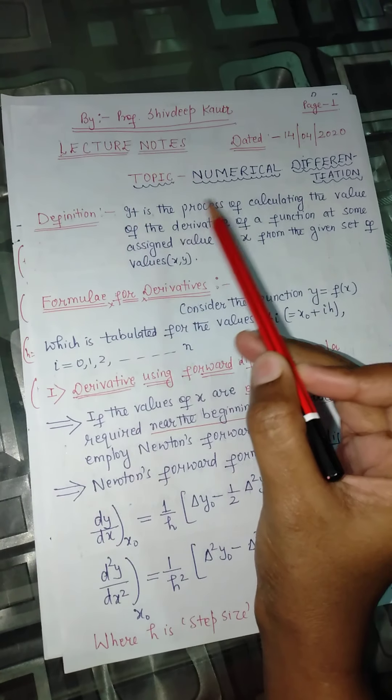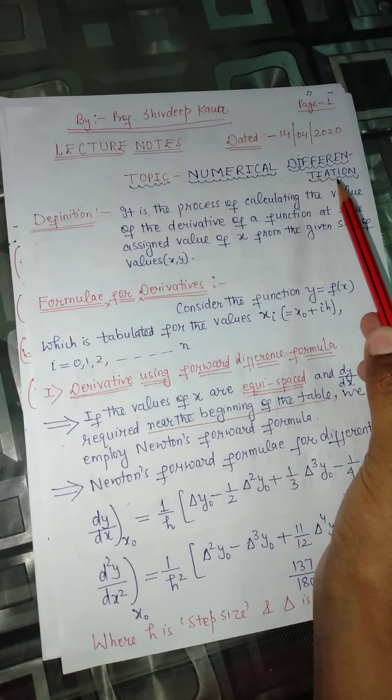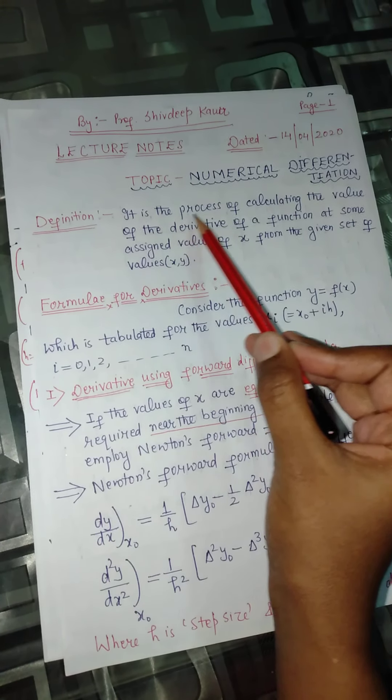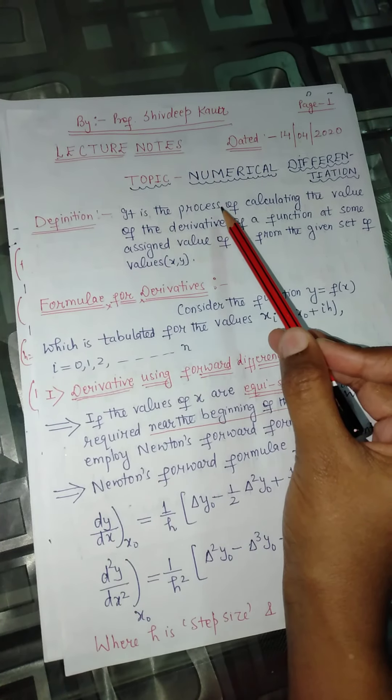Good morning students. Today we will discuss how to do numerical differentiation. Numerical differentiation is a technique, a process for calculating the value of a derivative — dy/dx, double derivative, or triple derivative — of some function f(x) or y at some assigned value of x, from a given set of tabulated values of x and y. We then have to find dy/dx for those values. There are several formulas for how we can find the derivatives.